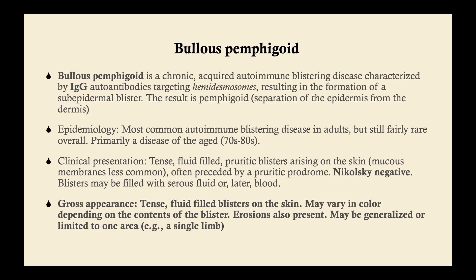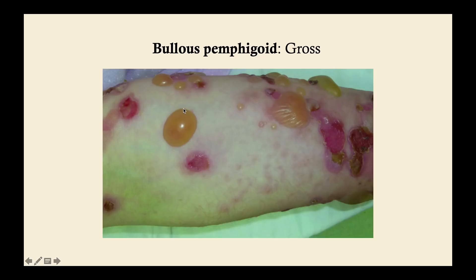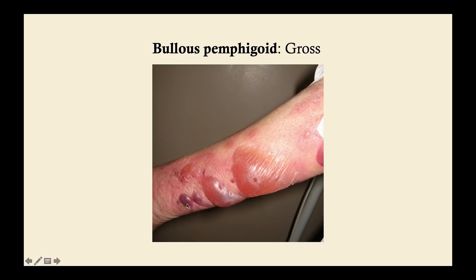These are Nikolsky negative — you can't grow these blisters. The blisters may be filled with serous fluid or, later, blood, which is why some look yellow and some look red. The gross appearance shows tense, fluid-filled blisters on the skin that may vary in color depending on contents, and erosions will be present where blisters have worn off. They may be generalized or limited to one area like a single limb, in contrast to pemphigus vulgaris.